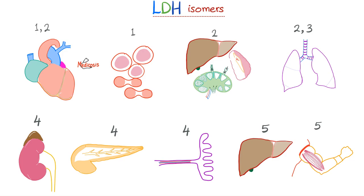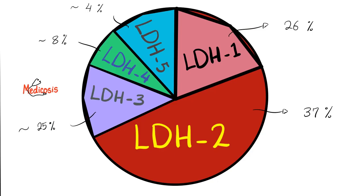The heart has LDH1 and LDH2. Red blood cells have LDH1. Reticuloendothelial organs have LDH2. The lungs have LDH2 and LDH3. The kidney has LDH4. The pancreas has LDH4. The placenta has LDH4. The liver has LDH5, and so do the skeletal muscles. Normally, in a healthy person, the most abundant LDH in the serum is LDH2.